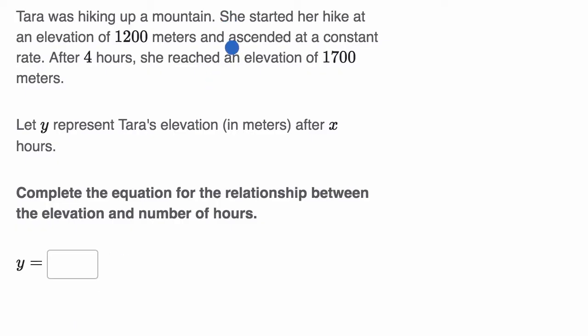So first of all, they tell us that she's ascending at a constant rate. So that's a pretty good indication that we could describe her elevation based on the number of hours she travels with a linear equation. And we could even figure out that constant rate.